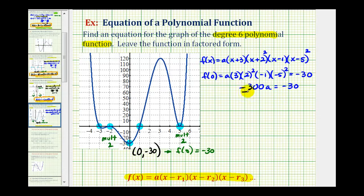Divide both sides by -300. This simplifies to a = 1/10. Now that we know the value of a, we have all the information we need to find a function to represent our graph.